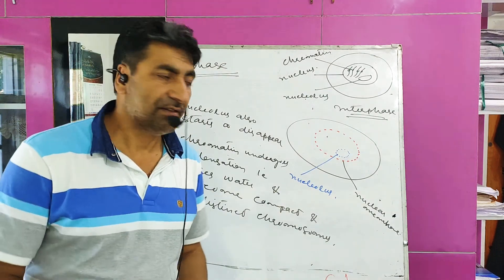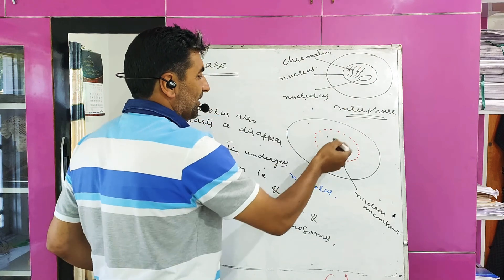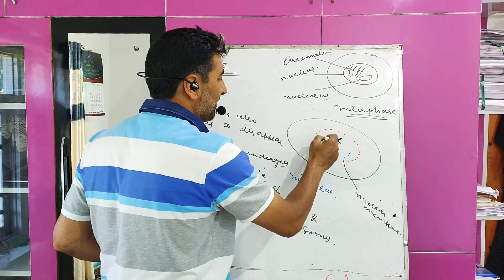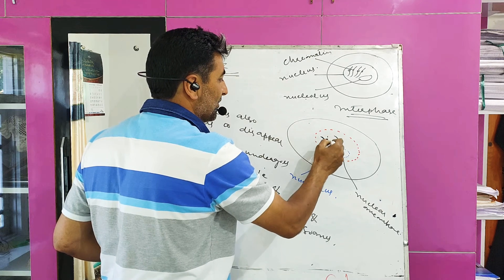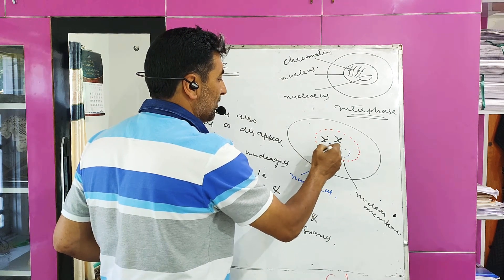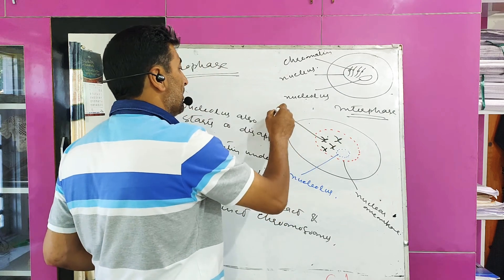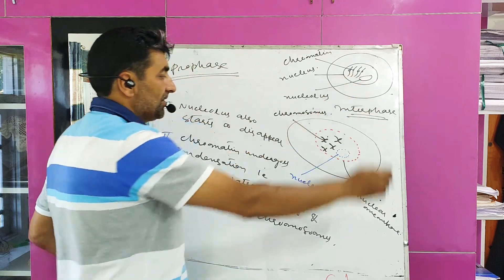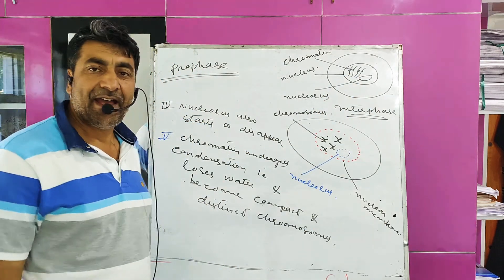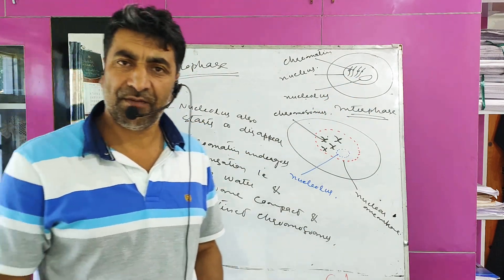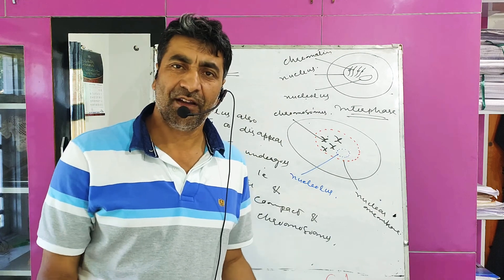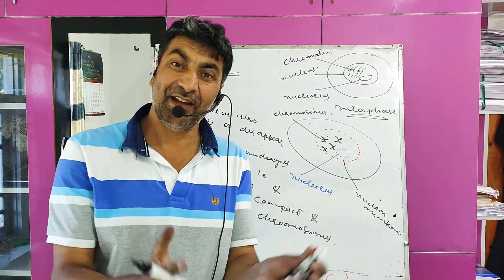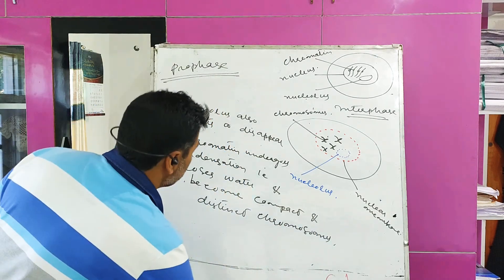These chromatin threads now become distinct chromosomes. As condensation occurs in chromatin fibers, they lose water, and chromatin is converted into compact and distinct chromosomes.